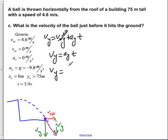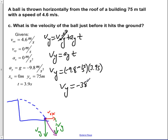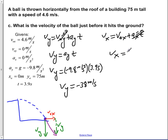Plugging in our values, Vy equals negative 9.8 meters per second squared times 3.9 seconds, giving Vy equals negative 38 meters per second. For Vx, we use Vx equals V0x plus ax·t. Since ax equals 0, this simplifies to Vx equals V0x, and we know V0x equals 4.6 meters per second.